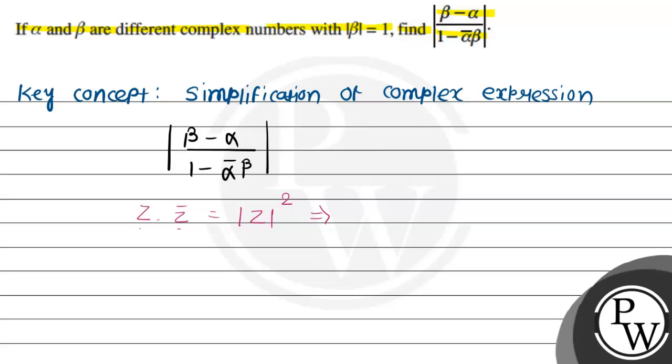Same way, we can apply to beta. So beta times beta bar is equal to modulus of beta entire square. Modulus of beta, we have 1 divided by 1. So here, 1 square is 1.